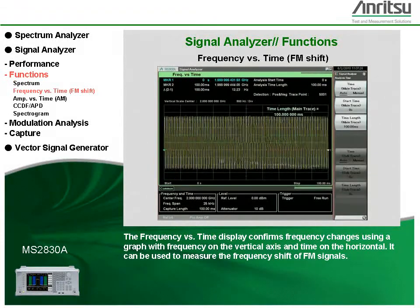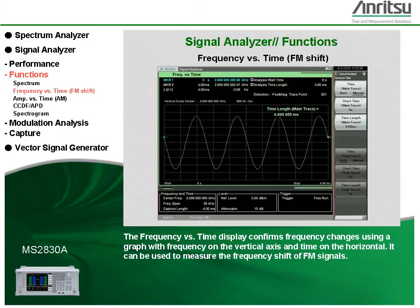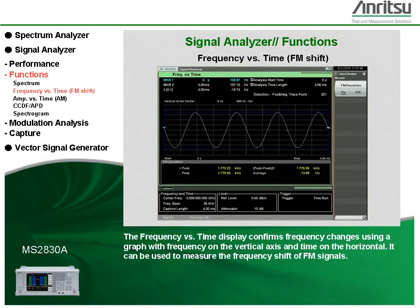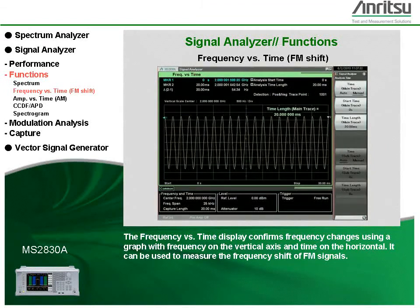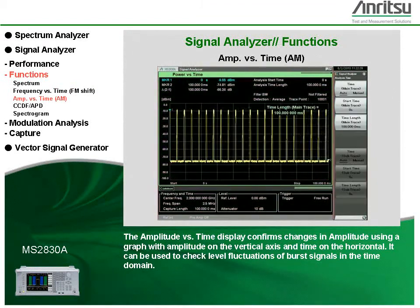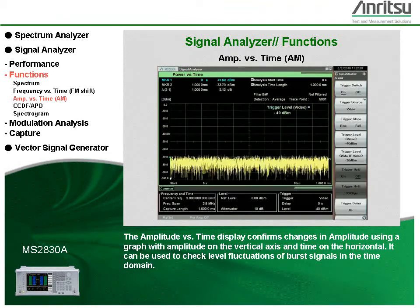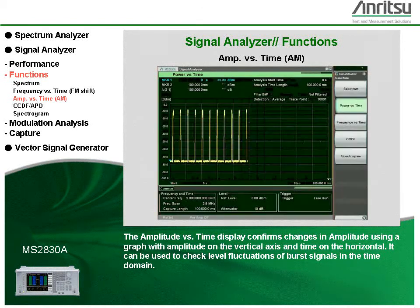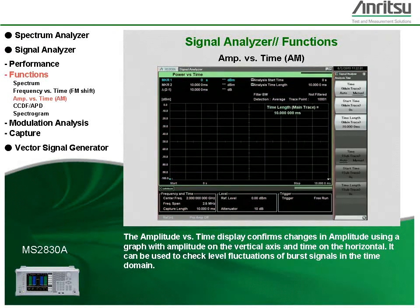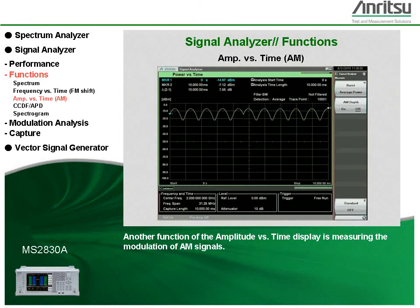The frequency versus time display confirms frequency changes using a graph with frequency on the vertical axis and time on the horizontal. It can also be used to check level fluctuations of burst signals in the time domain. Another function of the amplitude versus time display is measuring the modulation of AM signals.